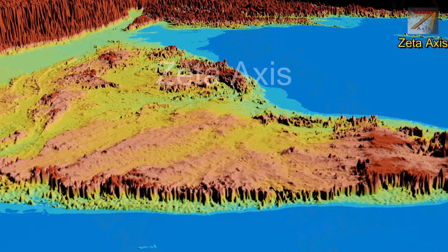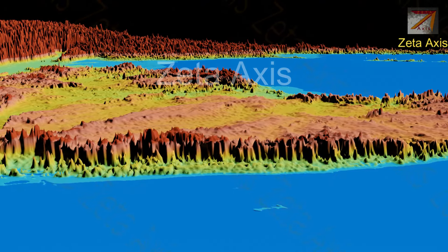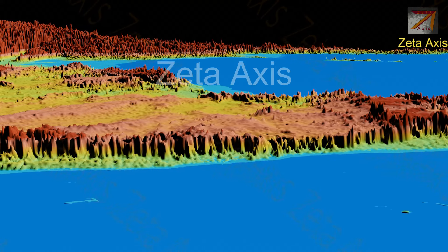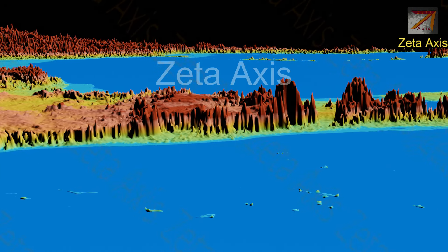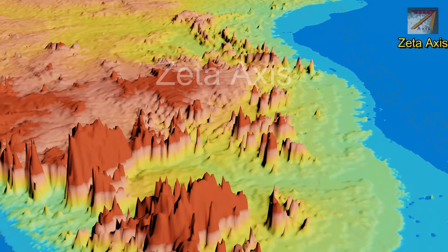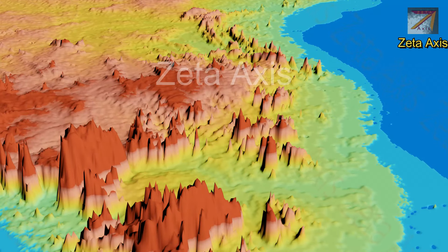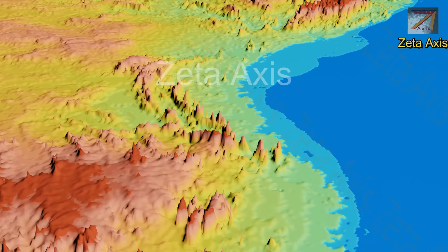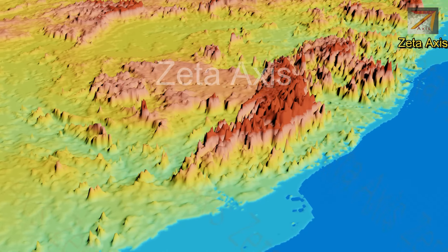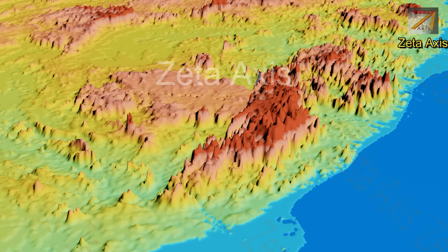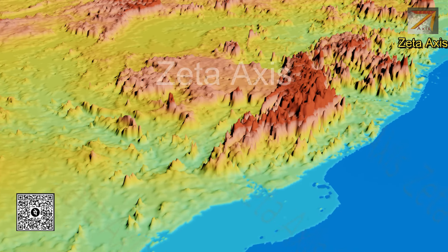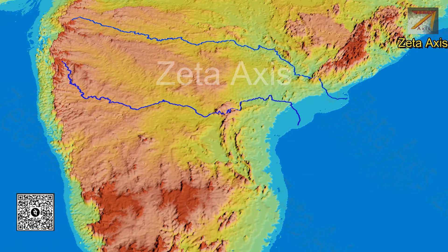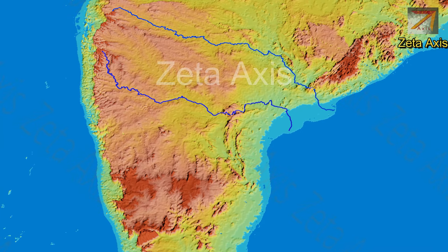The Western Ghats are a continuous chain of mountains with no gaps within them. But if we look at the Eastern Ghats, we can see a discontinuous chain of mountains. There are continuous mountains in the northern part of the Eastern Ghats in Odisha, but as we move toward the Godavari and Krishna basin, we see that the chain becomes discontinuous.